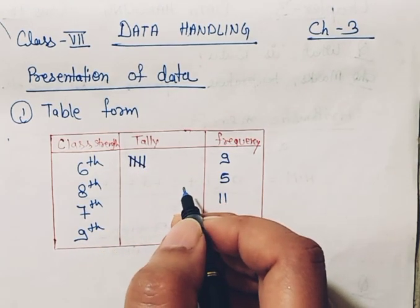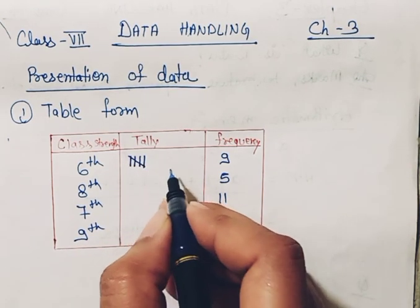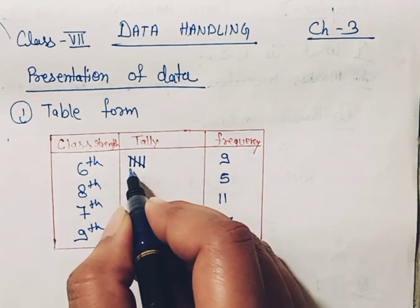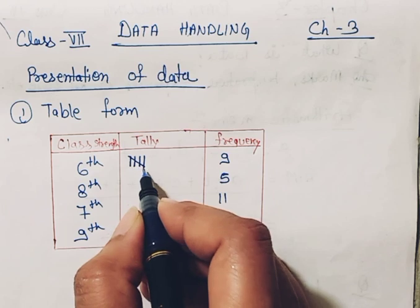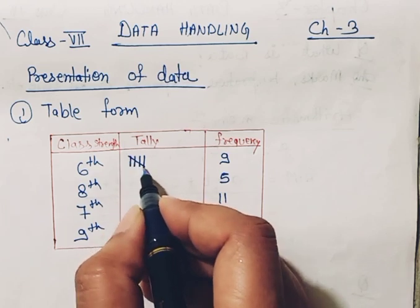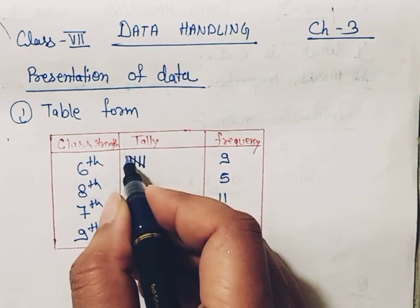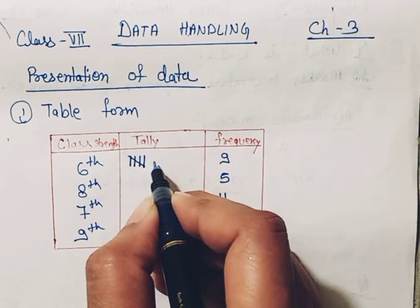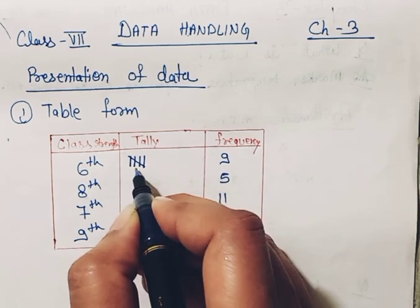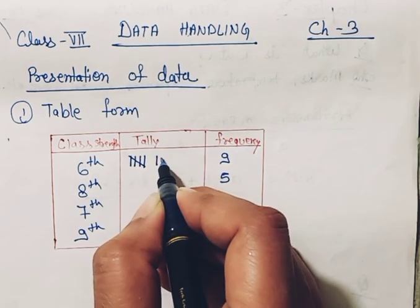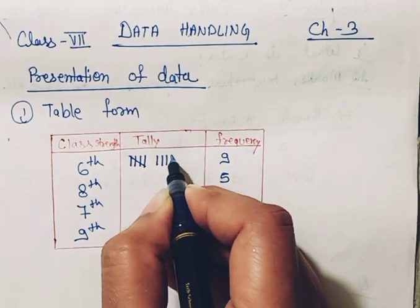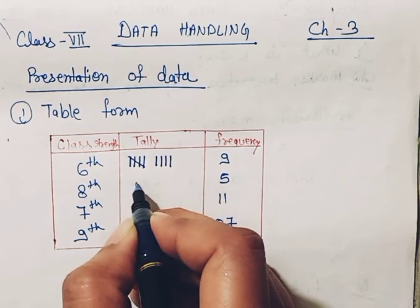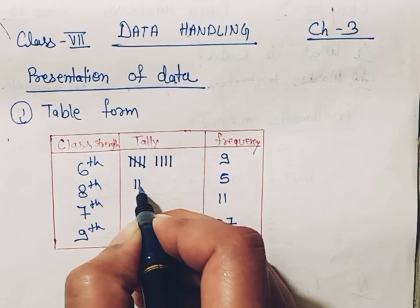That is the method to draw the tally diagram. You will count number 1, 2, 3, and 4, and the fifth line will be cut. This particular group is the collection of number 5. Again we have number 9, so 5, 6, 7, 8, and 9. Next is 5: 1, 2, 3, 4, and 5.